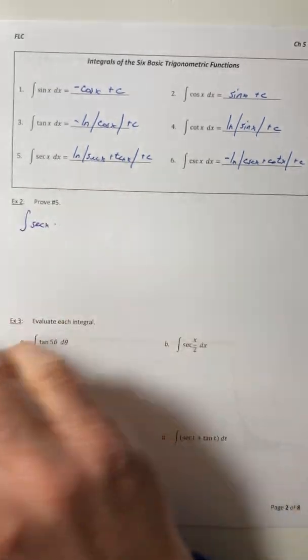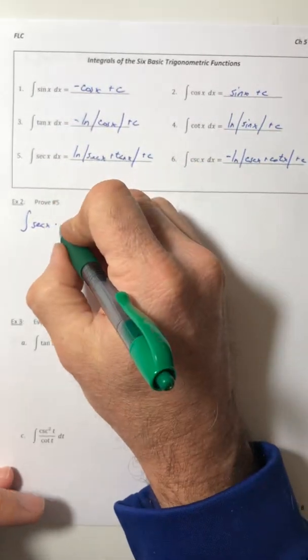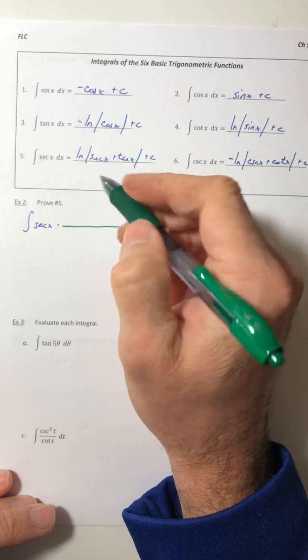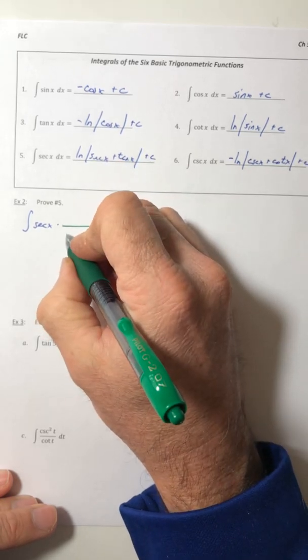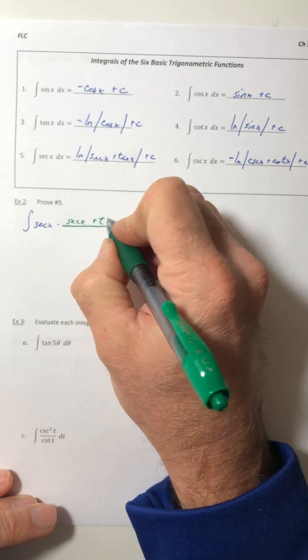So there were some pretty smart people back in the day. And somebody came up with a technique of like, hey, let's try this. Let's multiply the top and the bottom by secant plus tangent.